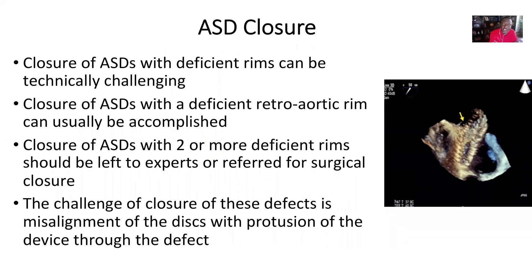Closure of ASDs with deficient rims can be technically challenging. The closure of an ASD with a deficient retro-aortic rim can usually be accomplished. When you do have two or more deficient rims, you should either leave this to someone who is an expert in this field or refer them for surgical closure, as the risks may be higher. The challenge of closure of these defects is usually misalignment of the discs, with prolapse of the discs through the defect into the right atrium, as seen in this picture.